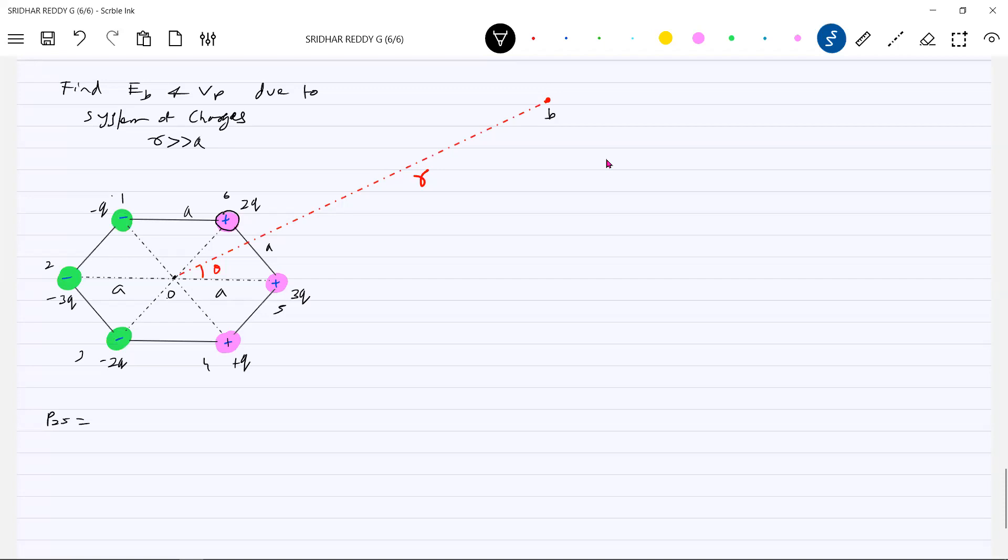The magnitude of charge is 3Q. So this will become 2A into 3Q altogether, 6AQ. What about one four? One four will be 2A into Q, so this is 2AQ. What about three six? Three six will be 2A into 2Q, 4AQ.